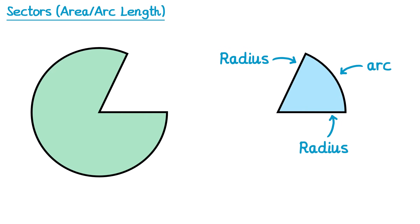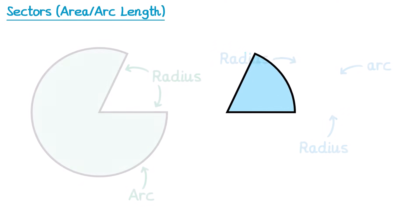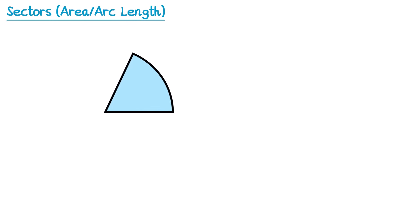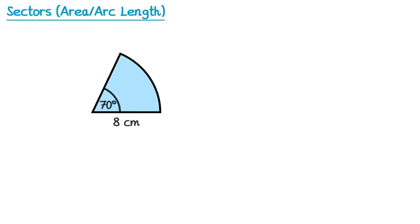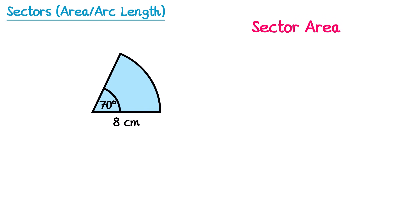You can see that's the same for the other sector — we have a radius here and here, and a much bigger arc going around here. If we add some information onto this sector, then we can calculate its sector area.